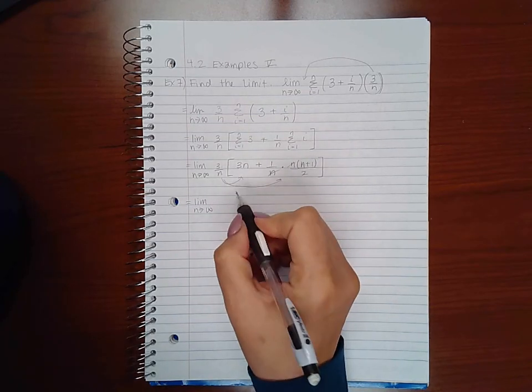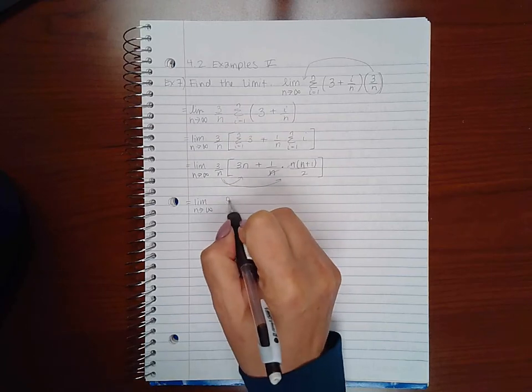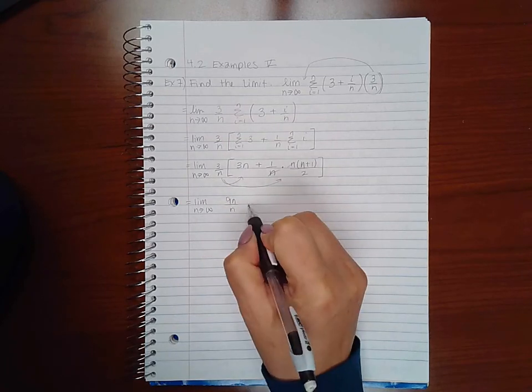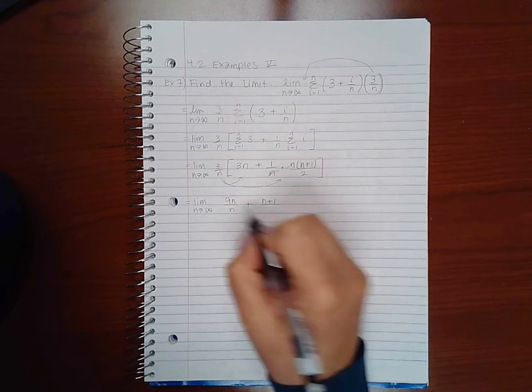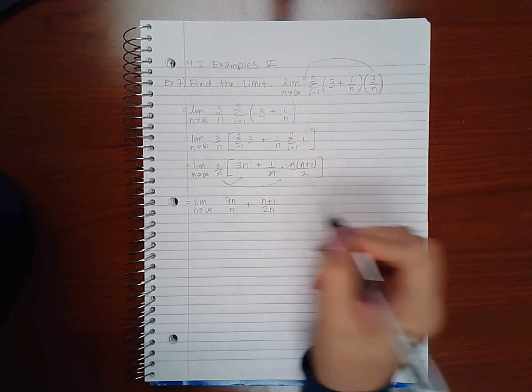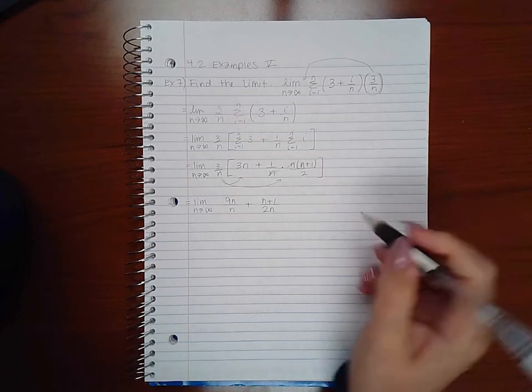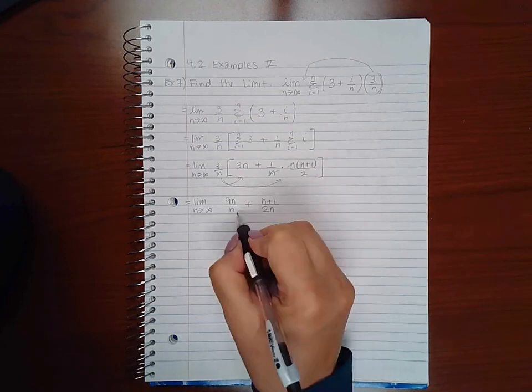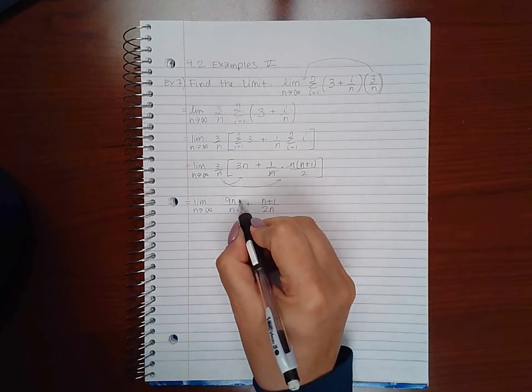So 3 times 3 is 9N over the N plus N plus 1 over N times 2 which is 2N. And then here they almost have the common denominator so I'm going to multiply this fraction by 2 and 2.